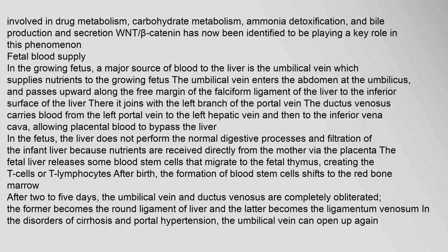In the growing fetus, a major source of blood to the liver is the umbilical vein, which supplies nutrients. It enters the abdomen at the umbilicus, passes along the falciform ligament to the inferior surface of the liver, and joins with the left branch of the portal vein. The ductus venosus carries blood to the left hepatic vein and then to the inferior vena cava, allowing placental blood to bypass the liver. The fetal liver releases blood stem cells that migrate to the thymus, creating T lymphocytes.